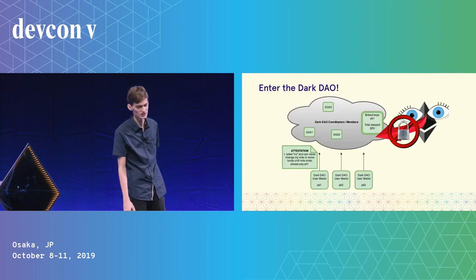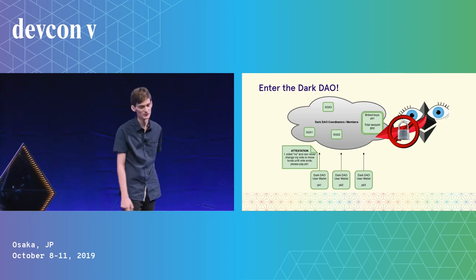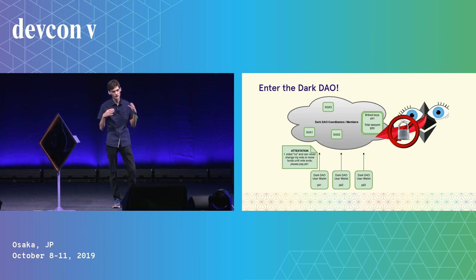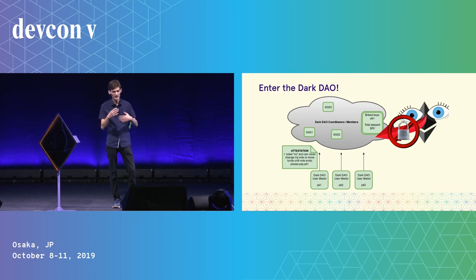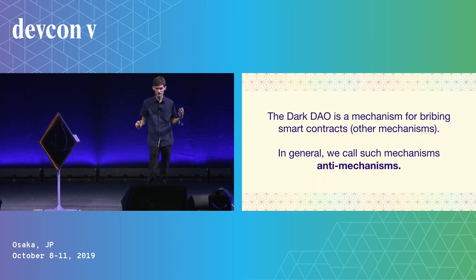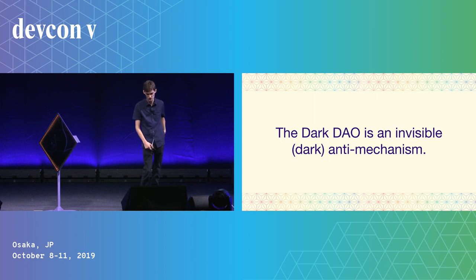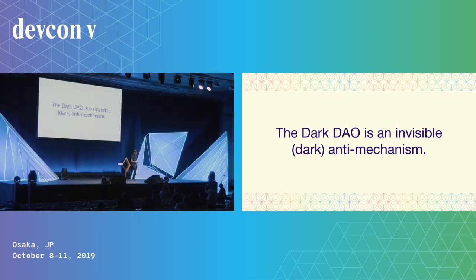Chief among the challenges is the ease of coordinating bribery. Last year I wrote a blog post called The Dark DAO describing a nightmare scenario where people can build bribery systems for smart contracts that operate completely in the dark. No one can tell exactly what players are being bribed to do, how many are being bribed, or if the attack is even succeeding. Users are guaranteed that the bribing party won't get control of their money — it's a trustless bribing infrastructure.